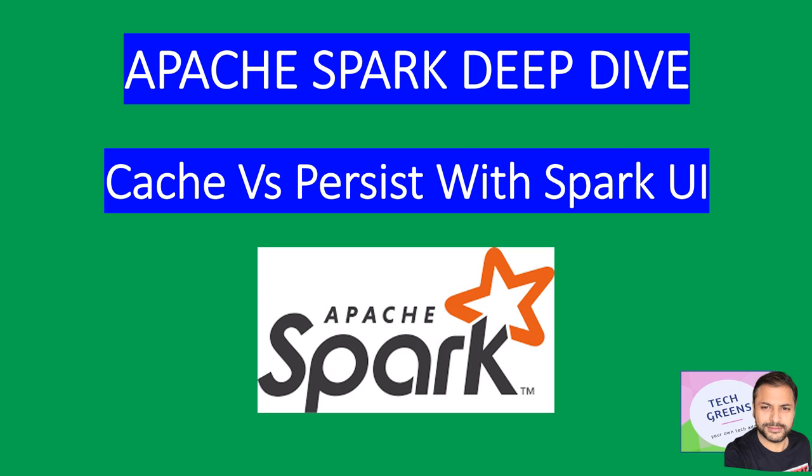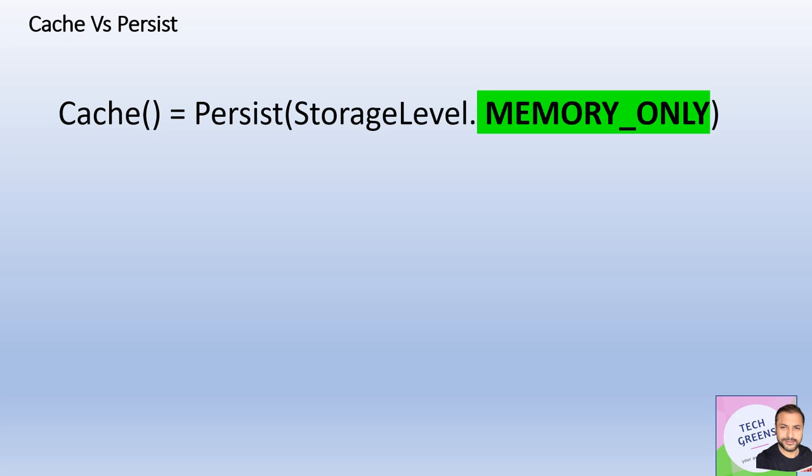Hello friends, welcome back to Tech with Veeresh. In continuation of our series on Apache Spark deep dive, today we'll pick up a very interesting and common topic: what is the difference between the cache and persist APIs given by Spark? What is the difference between the two APIs, where should we use which one, and we'll take a look at these two APIs with the help of the Spark UI.